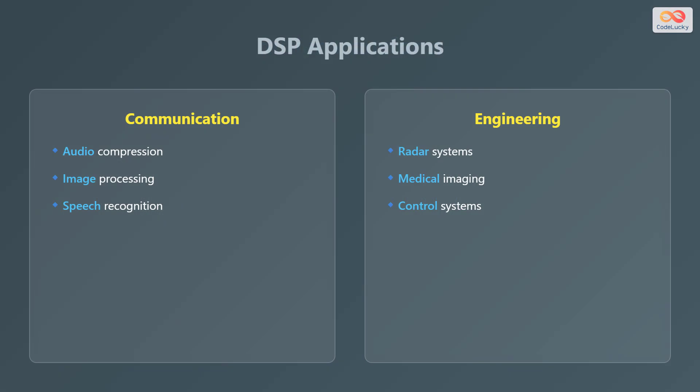Digital signal processing has numerous applications across various fields. In communication, it is used for audio compression, image processing, and speech recognition. In engineering, DSP is applied in radar systems, medical imaging, and control systems.